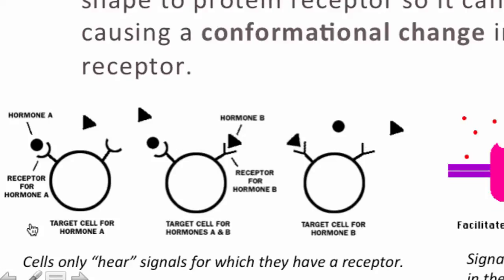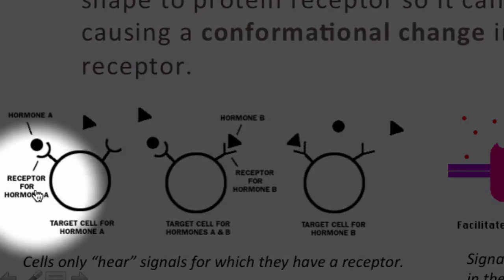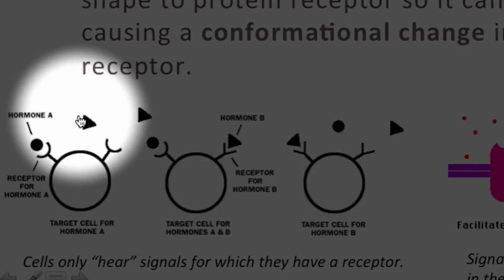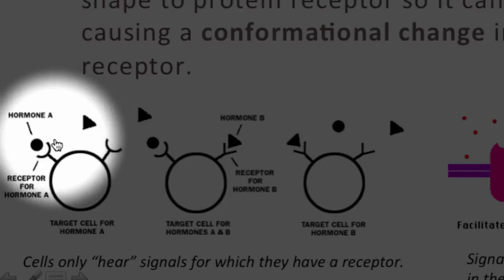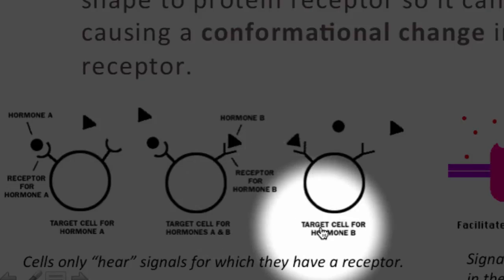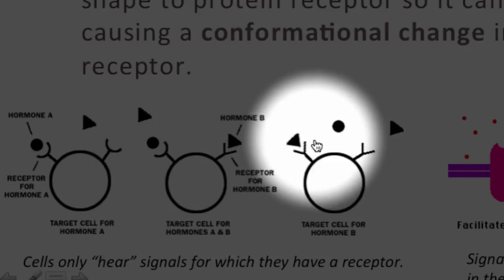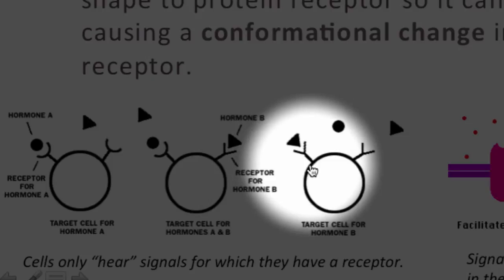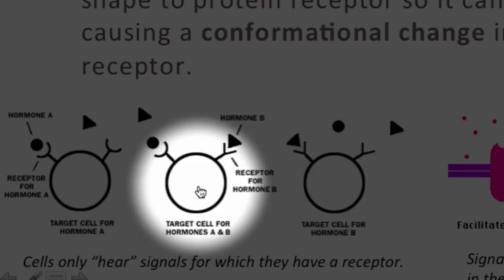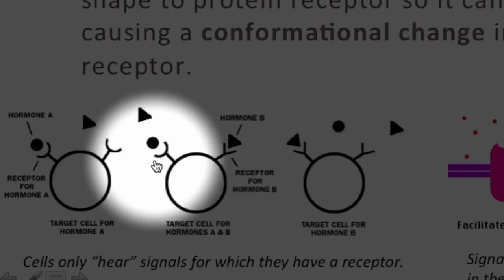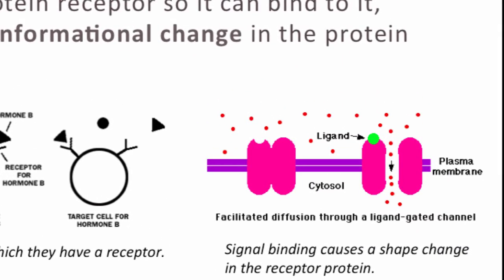As discussed earlier, cells only hear signals for which they have a complementary receptor. This first cell would not respond to hormone B, which is shaped like a triangle, because it only has receptors that are circular and complementary to hormone A. The last cell would only respond to hormone B because it only has triangular-shaped receptors. However, the cell in the middle would respond to both hormone A and hormone B because it has both types of receptors.